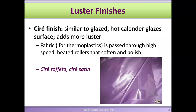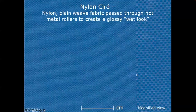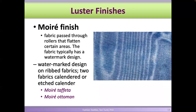Saure finish is similar to glazed but uses hot calendars especially for thermoplastic fabrics — you can't create that luster on natural fabrics like cotton. The heat brings the thermoplastic fibers close to melting temperature, softening and flattening them, essentially heat-setting the fibers in a flat state, creating a super glaze. Taffeta and satin sometimes go through the saure finish, creating a wet look on the surface.